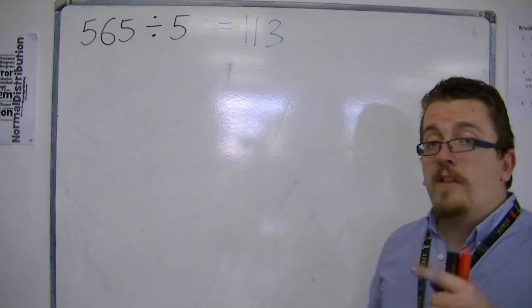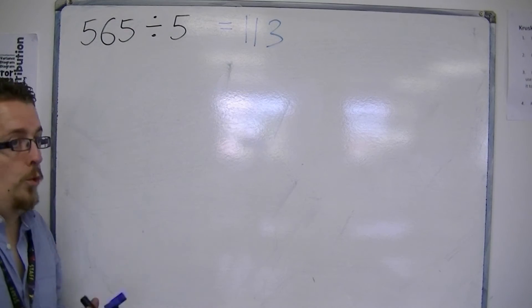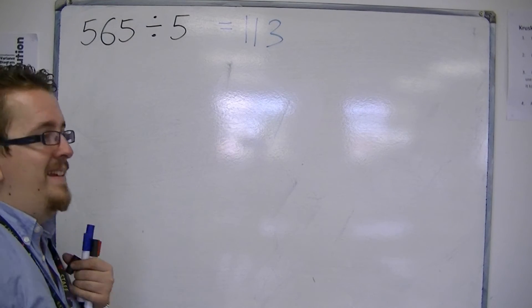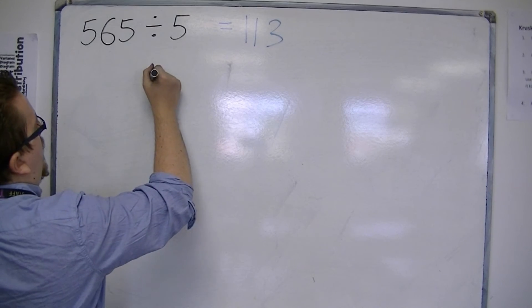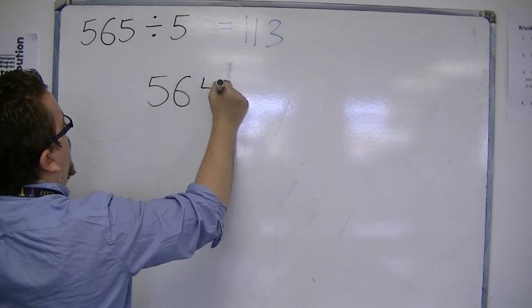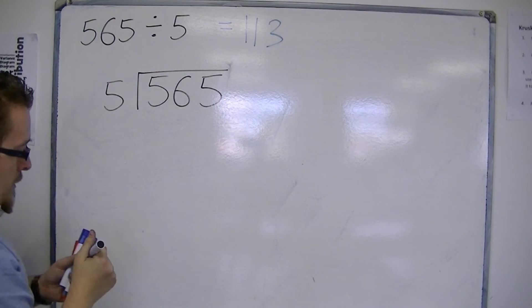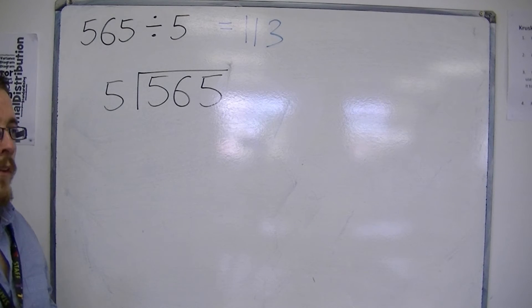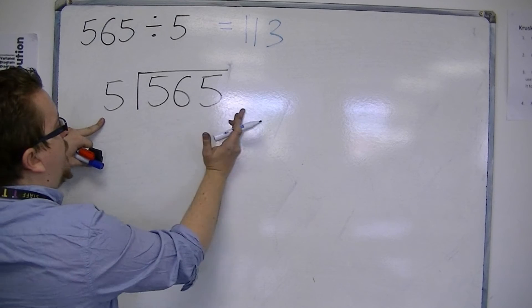The next method is long division. Long division is called as such because it can take up quite a length of the board. It's set up in the bus stop, like this, and works in the way that you do fives into fives, so you're always working from the left to the right.